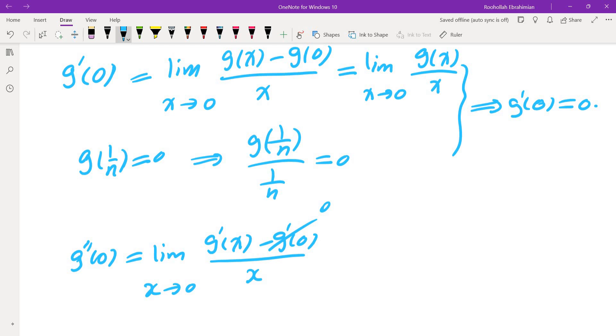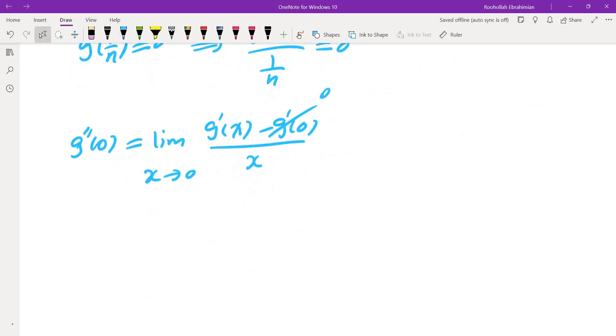Unfortunately I don't know g prime of 1 over n. But I don't really need g prime of 1 over n. I only need g prime of a sequence that converges to 0. Can I find g prime of a sequence that converges to 0?